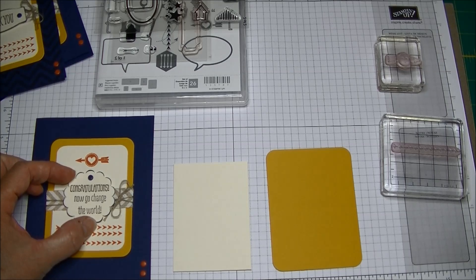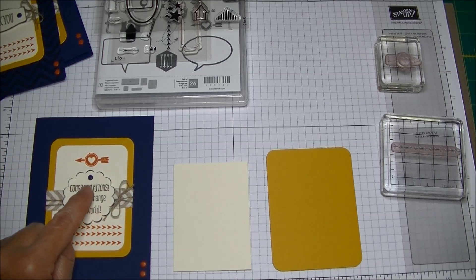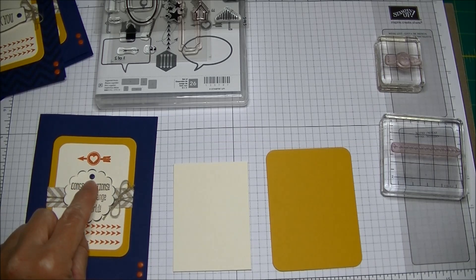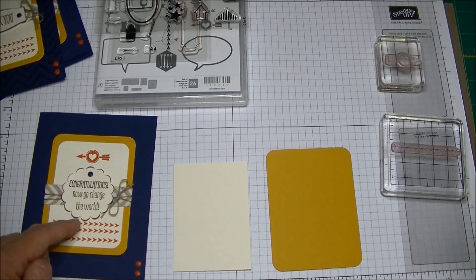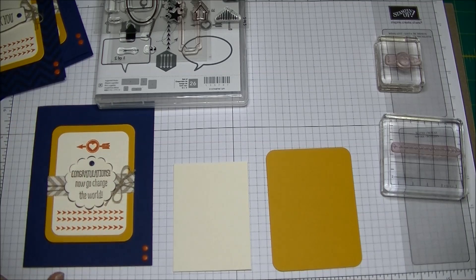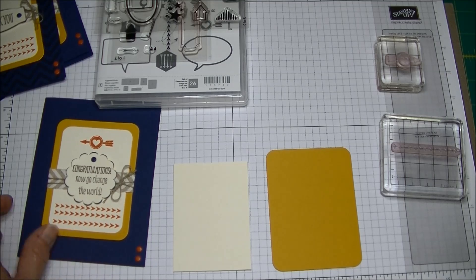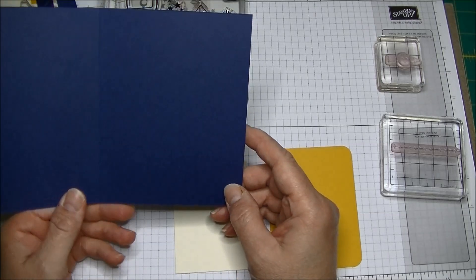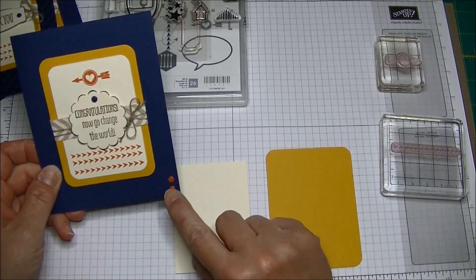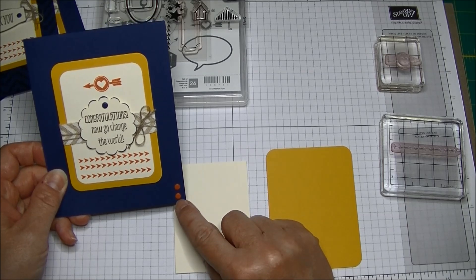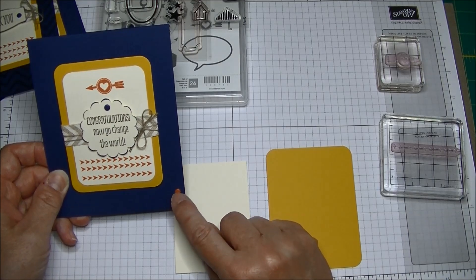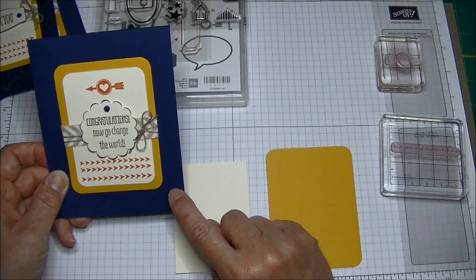For this one I used the one and three-quarter inch scallop circle punch. You can see I've got my sentiment inside stamped in Soft Suede. I've got a Knight of Navy candy dot from the Regals candy dot collection and I've edged this in Knight of Navy to make it pop a little bit. Everything else is the same.